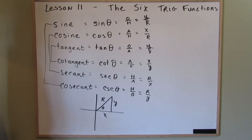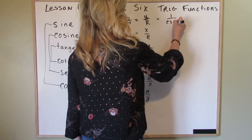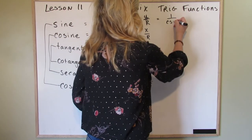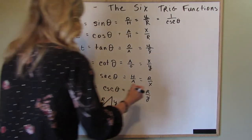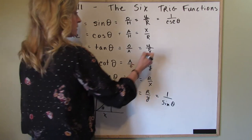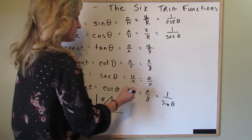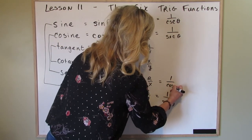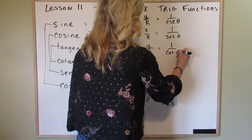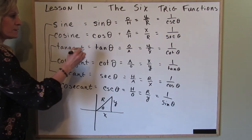If the sine is a reciprocal of the cosecant, it's one over the cosecant — that's csc of theta. That means the cosecant is one over the sine of theta. The cosine would then be one over the secant, which means the secant is one over the cosine. The tangent is one over the cotangent, and the cotangent is one over the tangent.